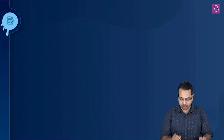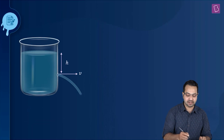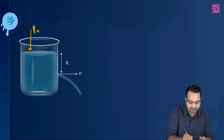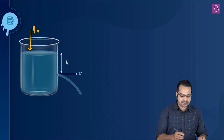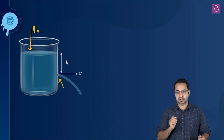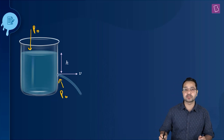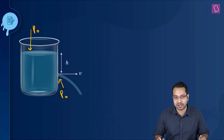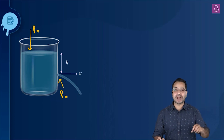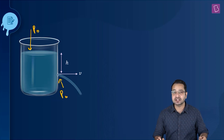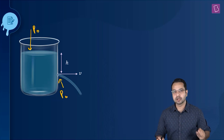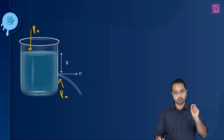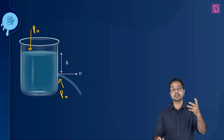Since this is an open tank, the pressure at the surface of the liquid is going to be equal to the atmospheric pressure, and since the orifice is exposed to the atmosphere, the pressure here also is going to be P0, which is the atmospheric pressure. So the pressure at the orifice and the pressure at the surface of the liquid is the same — this is the consequence of our assumption that this is an open tank.